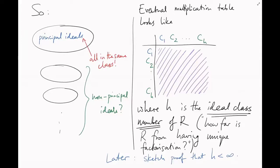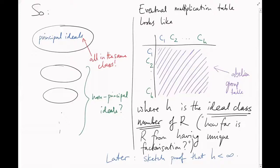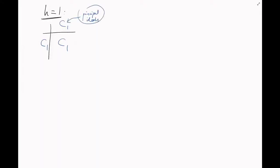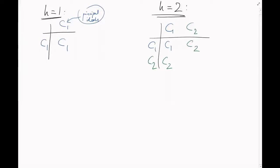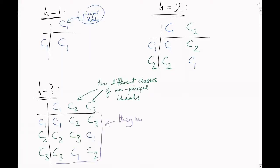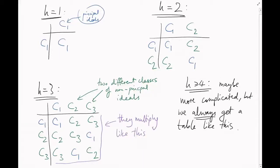I won't spell out all the details, but at this point we do have all the information necessary to know that ideal classes form an abelian group. The principal class is the identity element, and you can find the inverse of a class by taking any fractional ideal in that class, taking its inverse fractional ideal, and taking the class of that. In particular, even if you don't know what an abelian group is, this implies our multiplication table will be well defined. Each row and each column will contain one of each class, sort of Sudoku style. So if H = 1 we're in a UFD; if H = 2, the lower right entry had better be the principal class C₁; if H = 3, there's also only one way of filling in the table. For larger values of H there can be more than one possible way.